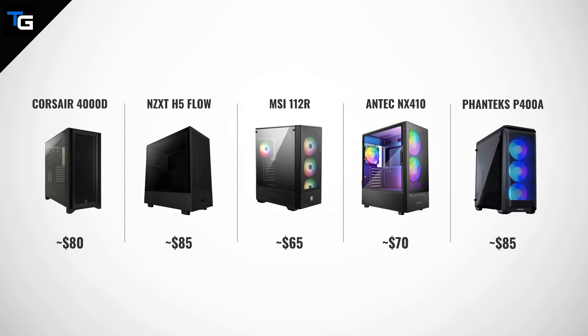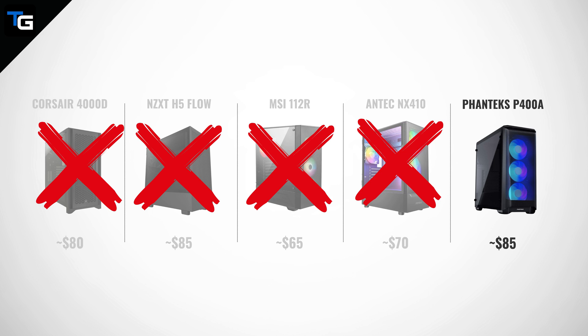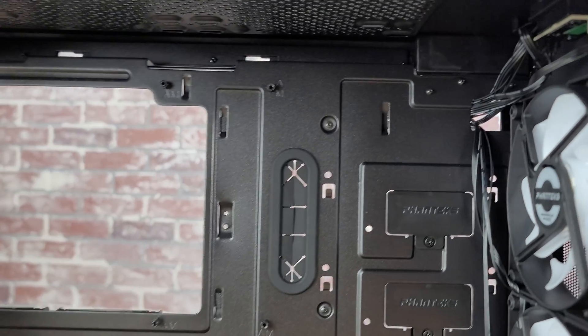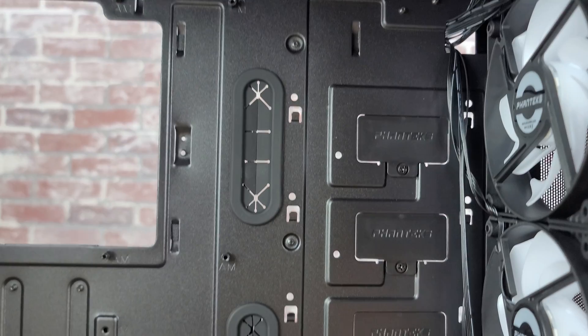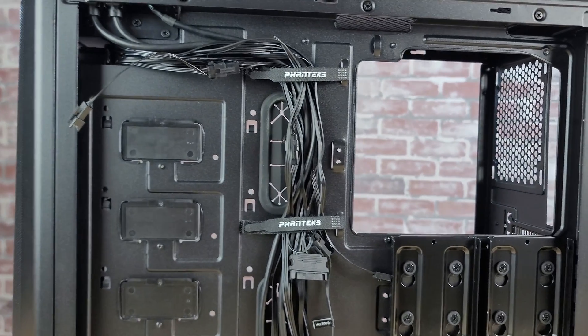So then it really just came down to personal preference. All of these cases came with mesh front panels, so they should all at least be acceptable on airflow. However, the Corsair 4000D and NZXT H5 Flow only came with two 120mm fans pre-installed, whereas the other three options all came with at least three fans pre-installed. So we eliminated those two off the bat. While the MSI and Antec cases were a bit cheaper, we liked the P400A a bit more. Looking at the inside of all three of those cases, the Phanteks P400A was the only one that offered rubber covers on the two main cutouts for routing cables. Furthermore, a look at the back of the motherboard panel shows that Phanteks includes three Velcro straps to help tie down cables.